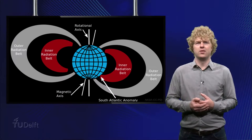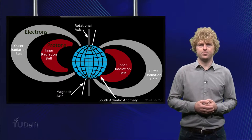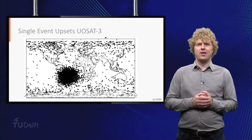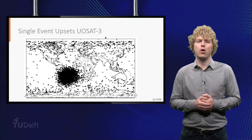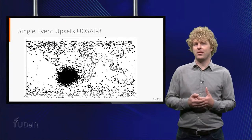Here you can see the Van Allen belts. The inner belt has protons trapped and the outer belt has electrons trapped. It is the Earth's magnetic field which keeps them trapped. The protons are more energetic and harder to shield against than the electrons. Please take note of an area above the South Atlantic where the inner belt comes very low and also impacts the lowest Earth orbits — this is called the South Atlantic anomaly. In this graph, all the detected radiation events of a satellite called UO-Z3 are plotted, clearly showing the impact of the South Atlantic anomaly.